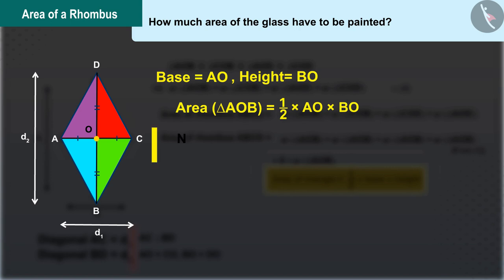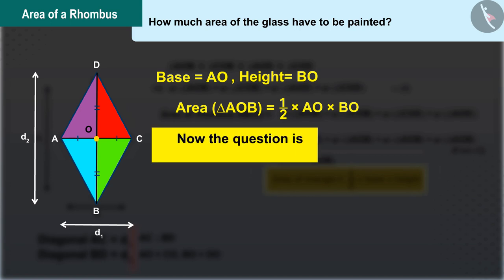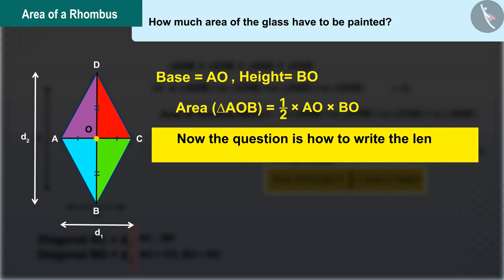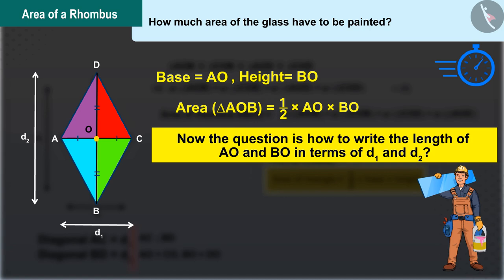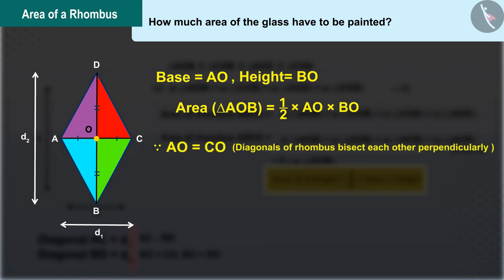Now the question is, how to write the length of AO and BO in terms of d1 and d2? As we know that AO and CO are of equal length and AO plus CO is diagonal AC, which is d1. Hence, the length of AO will be d1 over 2.